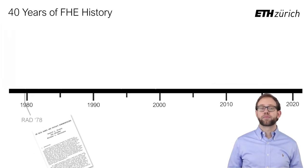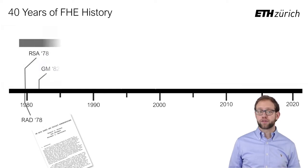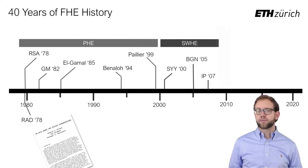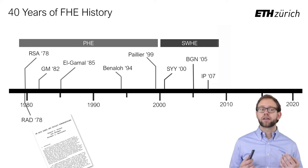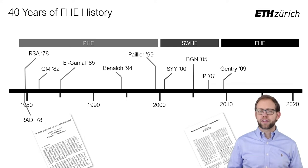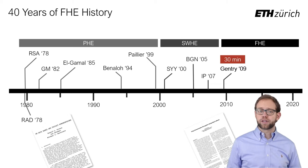FHE has been proposed under a slightly different name as far back as 1978, but remained an unachievable goal for many decades. While partially homomorphic schemes have been known for decades, progress towards fully homomorphic encryption really only started to accelerate in the 2000s. It wasn't until the breakthrough result by Craig Gentry in 2009 that we had schemes that could support arbitrary computations. Gentry's initial scheme was asymptotically efficient but practically unimplementable; however, follow-up work soon allowed a first implementation. Nevertheless, these first-generation schemes still took around half an hour to perform a single multiplication, a slowdown of over a trillion times compared to a standard CPU multiplication instruction.